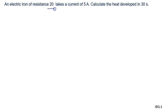An electric iron of resistance 20 ohms takes a current of 5 amperes. Resistance is given to us as 20 ohms. Current is given to us as 5 amperes.